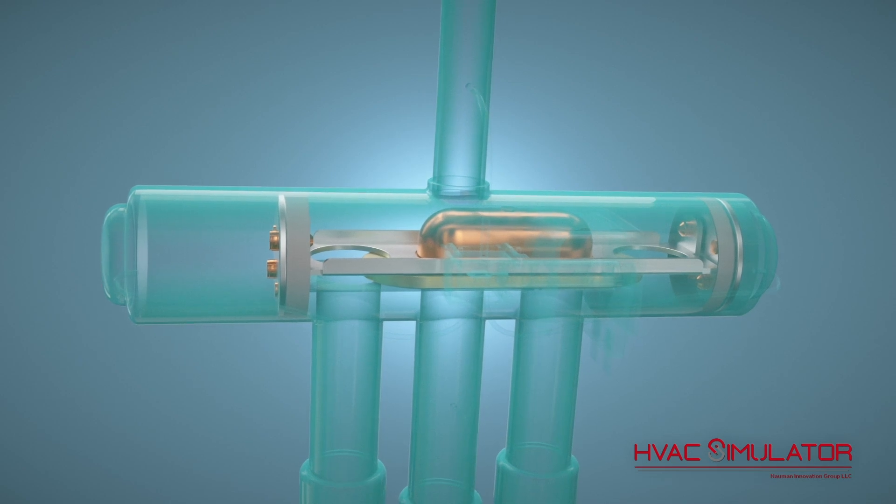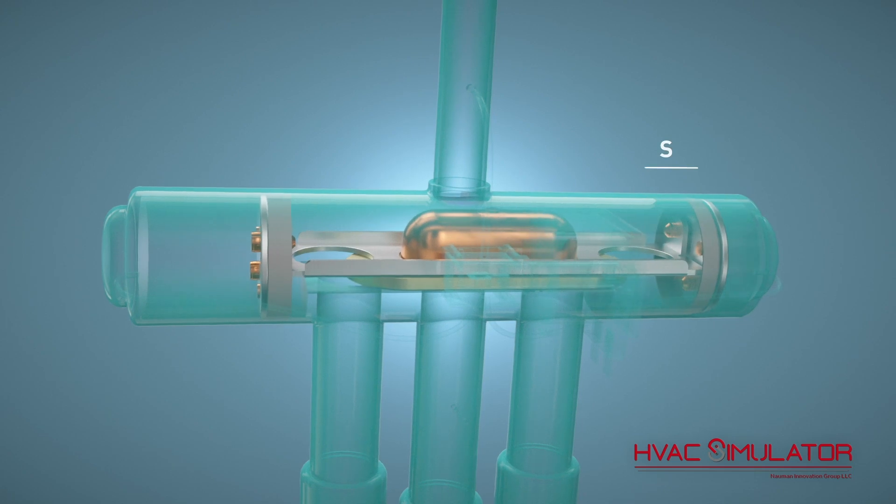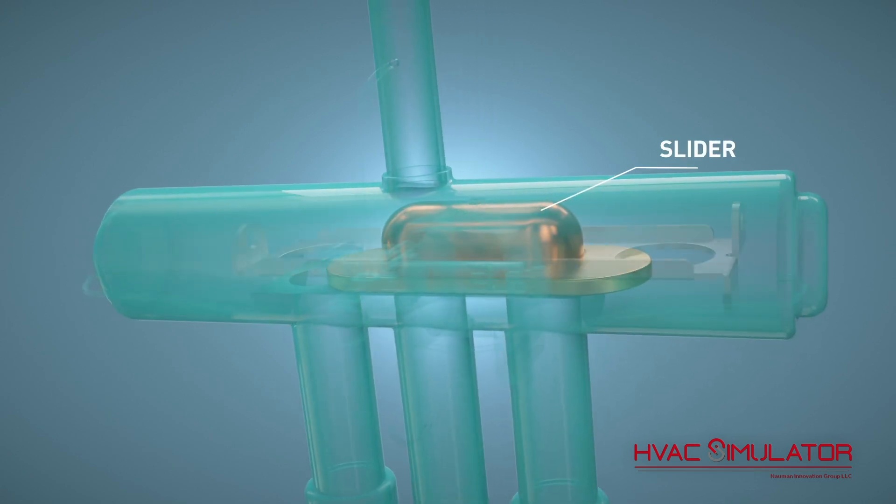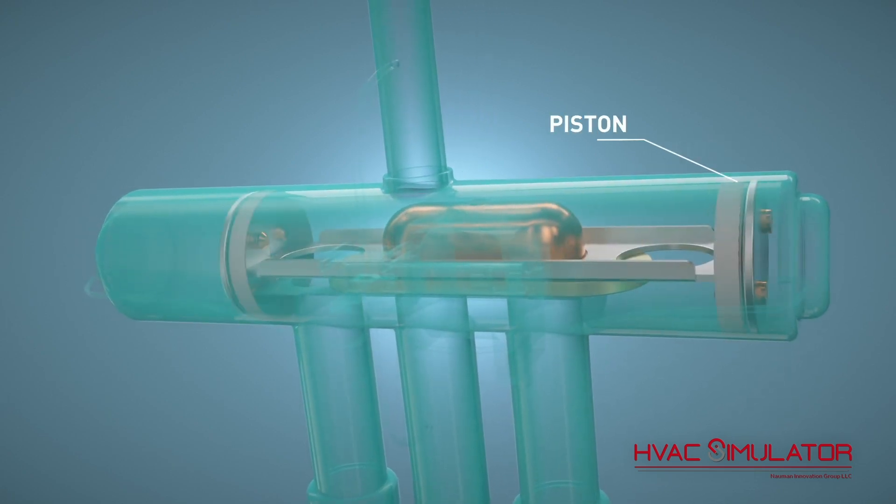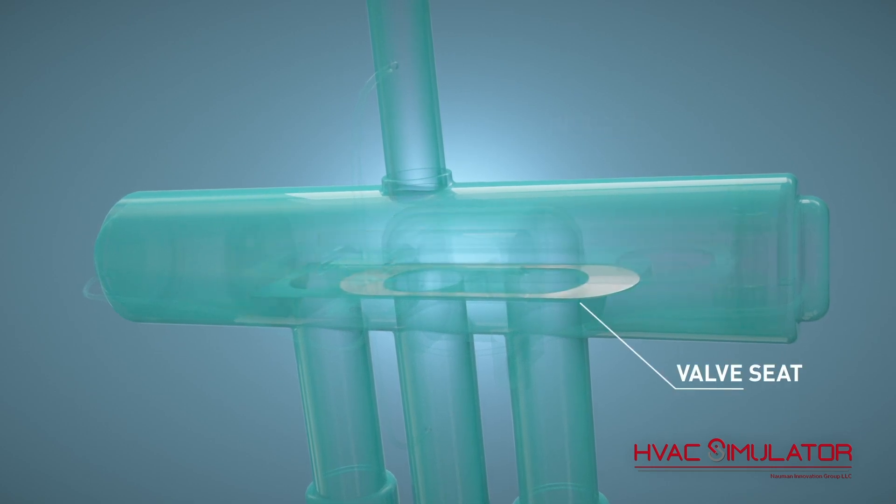Inside the valve body is a sliding mechanism that moves to change the flow of the refrigerant. The slider sits in the support frame and pistons form a tight seal against the valve body. The valve seat forms a tight seal with a gasket on the bottom of the slider.